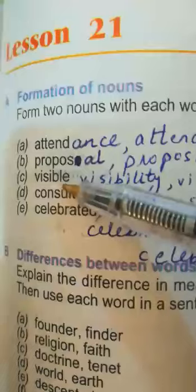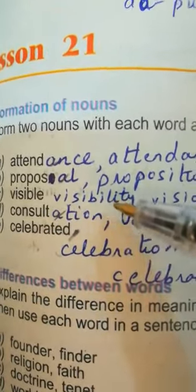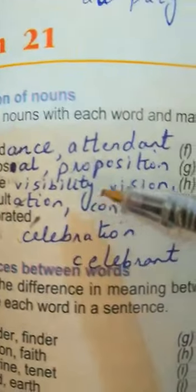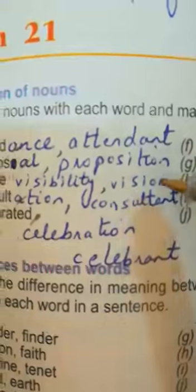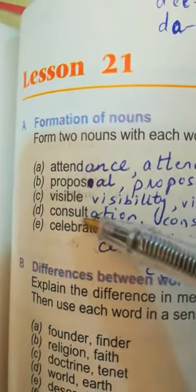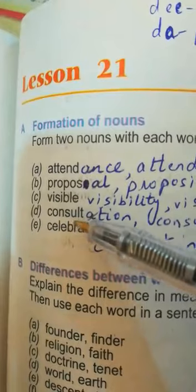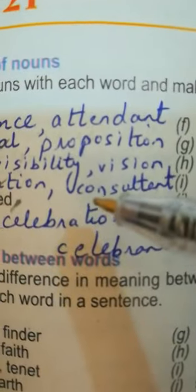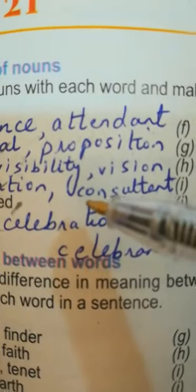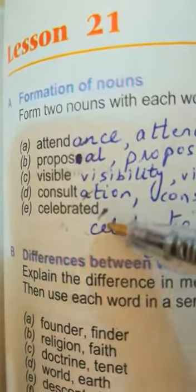Next word is 'visible': visibility (V-I-S-I-B-I-L-I-T-Y) and vision (V-I-S-I-O-N). Next word is 'consult': consultation (C-O-N-S-U-L-T-A-T-I-O-N) and consultant (C-O-N-S-U-L-T-A-N-T).